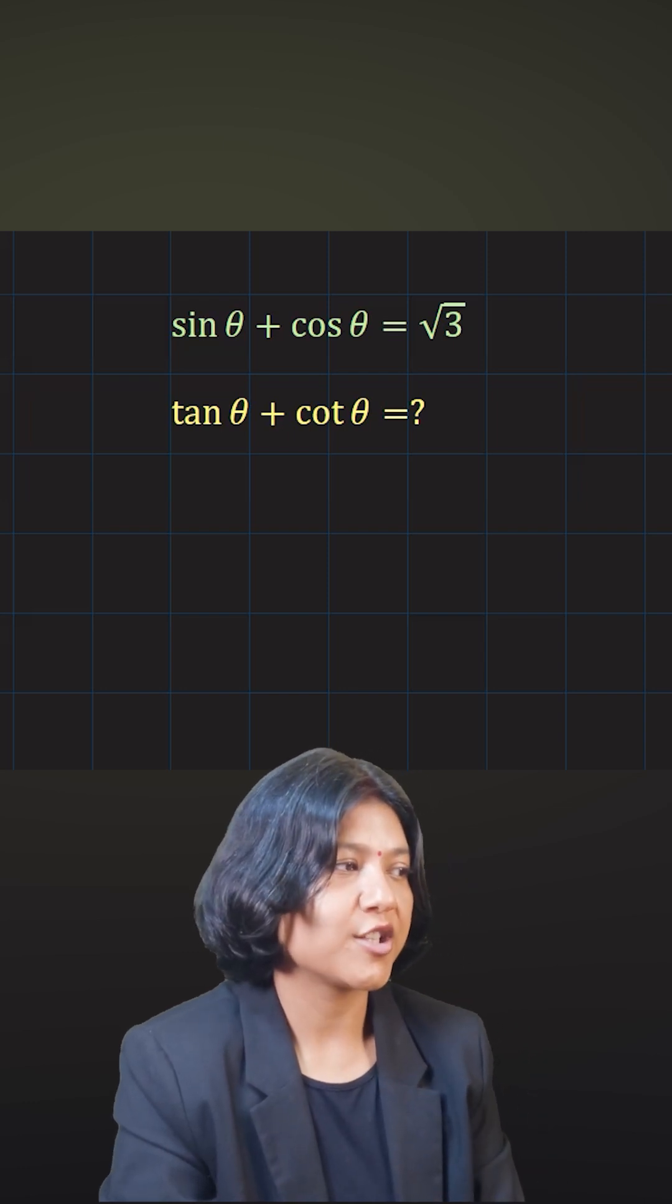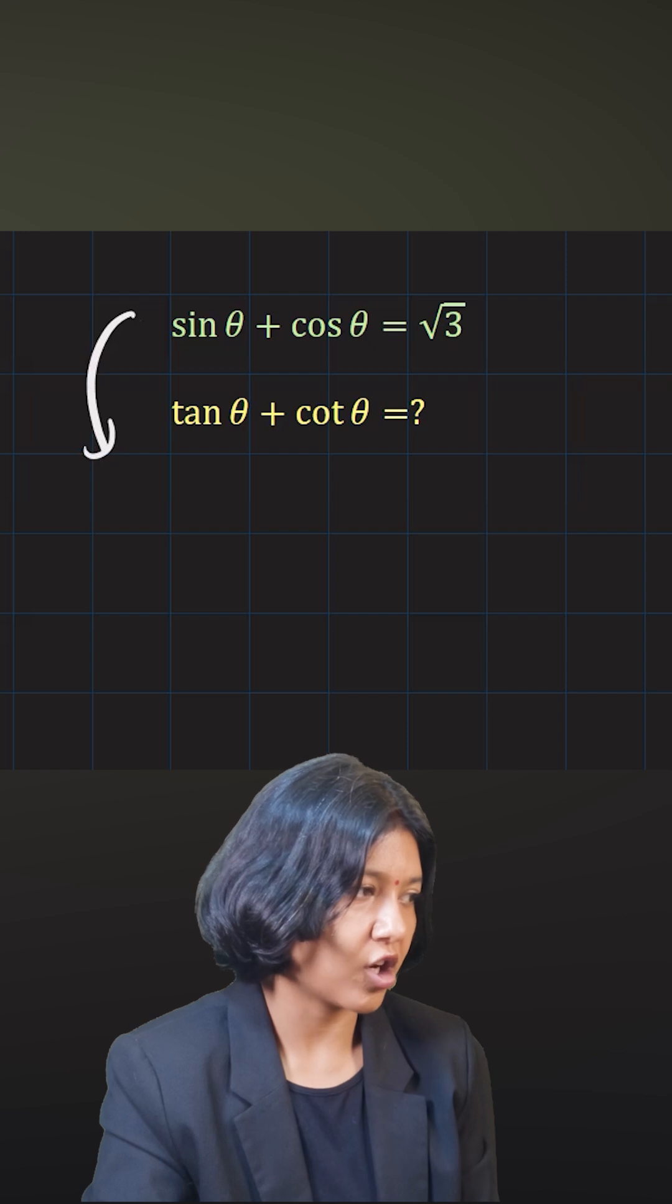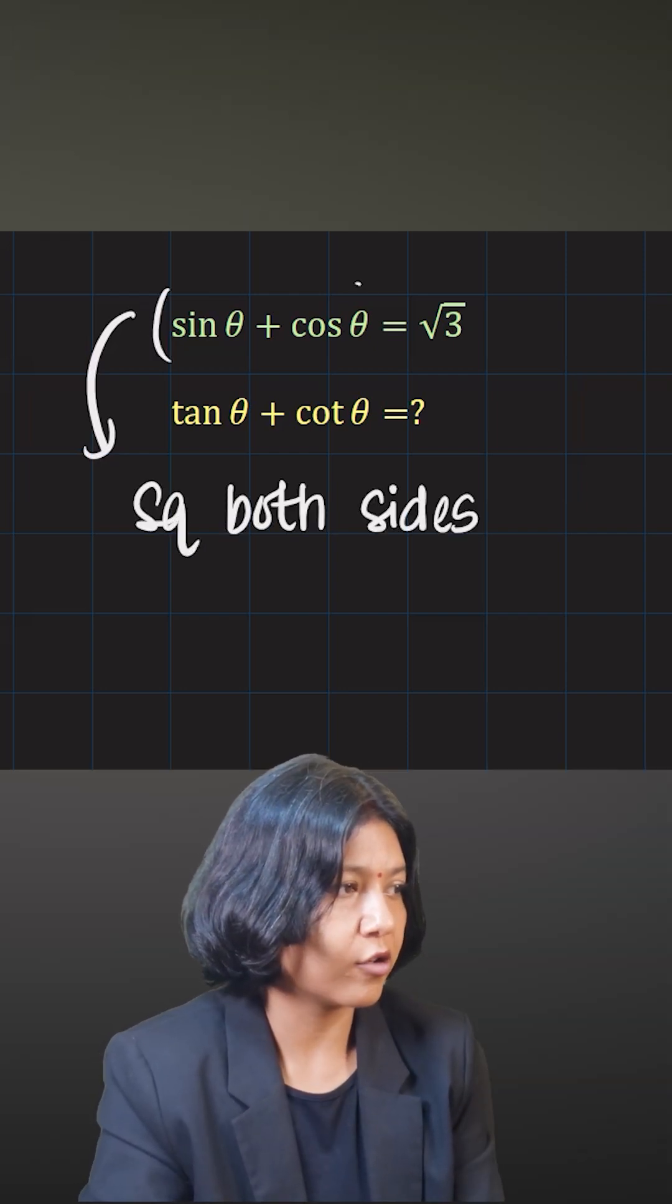Sine theta plus cos theta has been given as root 3. When I have the sum of sine and cos, take the square of both sides. Then what do you have? A plus B the whole square.